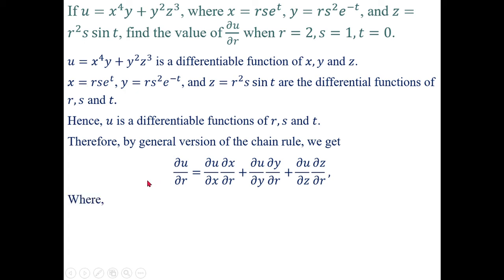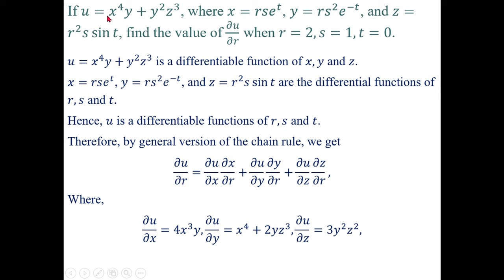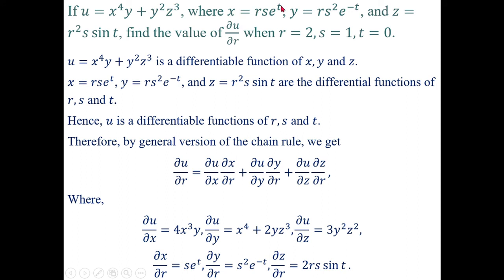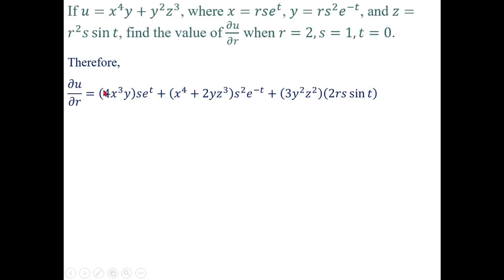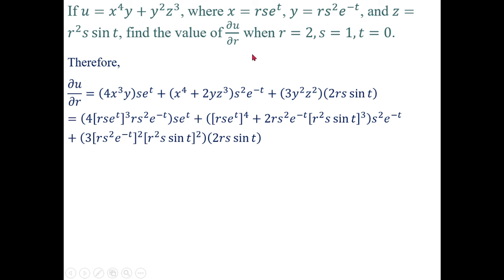Computing: ∂u/∂x = 4x³y, ∂u/∂y = x⁴ + 2yz³, ∂u/∂z = 3y²z². Also ∂x/∂r = s^t, ∂y/∂r = s²^(−t), ∂z/∂r = 2rs^(7t). So ∂u/∂r = 4x³y · s^t + (x⁴ + 2yz³) · s²^(−t) + 3y²z² · 2rs^(7t). We then replace x, y, z with their expressions in r, s, t.